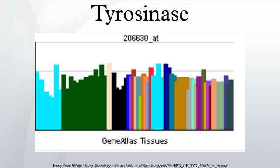Tyrosinase activity is very important. If uncontrolled during melanoma, it results in increased melanin synthesis. Decreasing tyrosinase activity has been targeted for the betterment or prevention of conditions related to the hyperpigmentation of the skin, such as melasma and age spots.